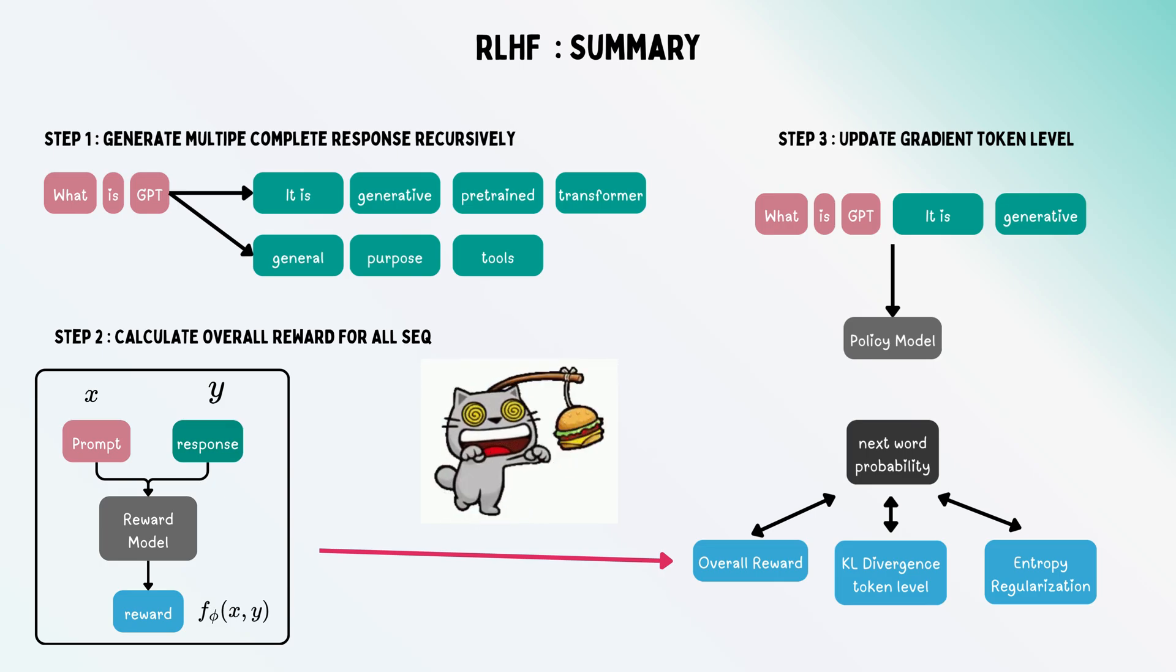Once we have the reward model, we use it like a carrot on a stick to tune the actual LLM. At each stage of next token prediction, we use this reward model along with two other terms: KL divergence to ensure it's not too different from the original policy, and entropy regularization.